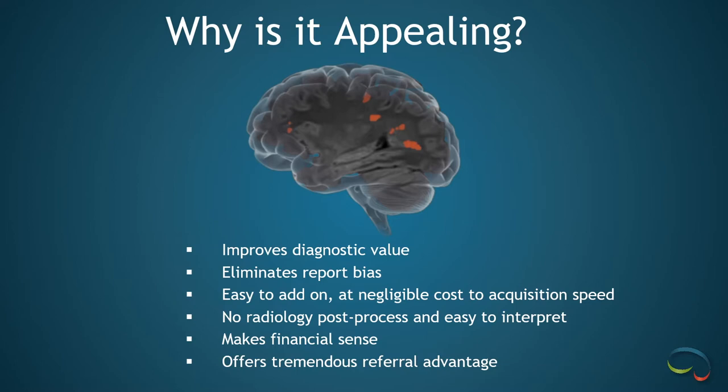Estimates of volume have always been incorporated into a standard MRI brain report for interpretation. The problem is that we all have different degrees of sensitivity for characterizing volume. What I might consider severe cerebral atrophy, my colleague might consider moderate. Quantitative volumetric imaging eliminates reader subjectivity — it tells us exactly what degree of atrophy is statistically significant for patient age.